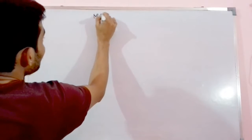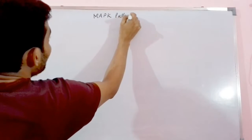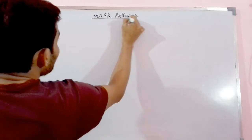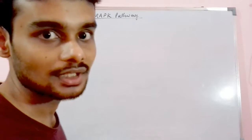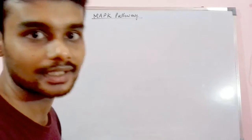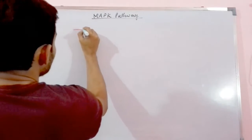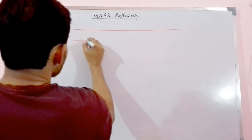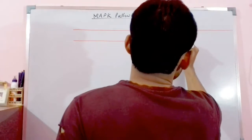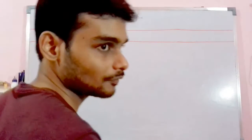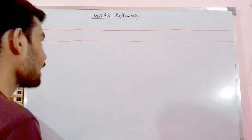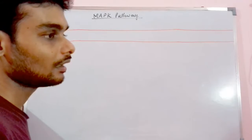Let's see how the MAP kinase pathway functions. Let me draw the plasma membrane, because whatever cellular transduction is happening, the plasma membrane is the sole barrier — it acts as a wall — to convey the message. Nothing can happen either inside or outside the cell without crossing that wall. The two red-colored ends are the hydrophilic polar ends, and the middle portion is the hydrophobic non-polar end.